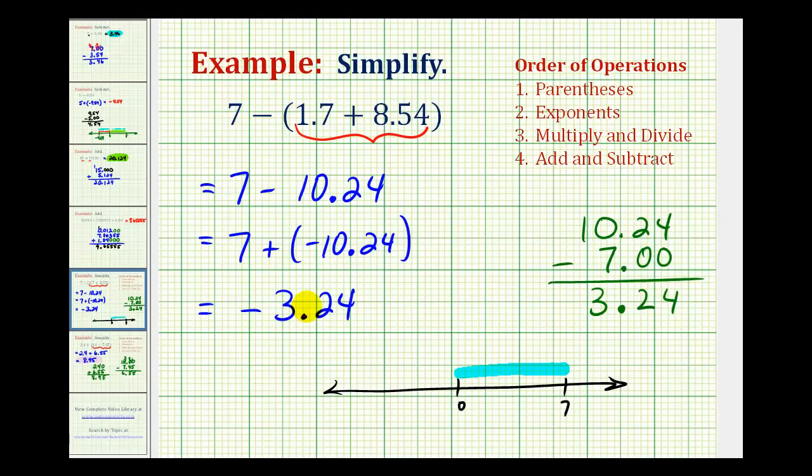Well, if we move left 7 units, we'd be back to 0. And then we have to move another 3.24 units, which does bring us to negative 3.24.